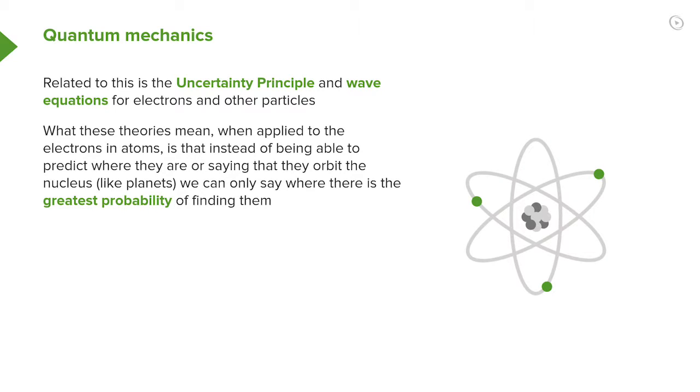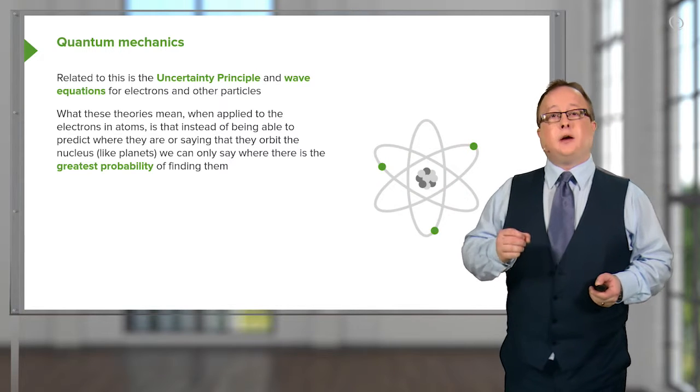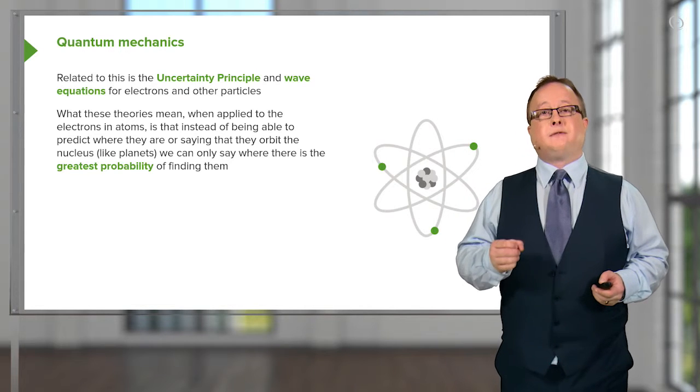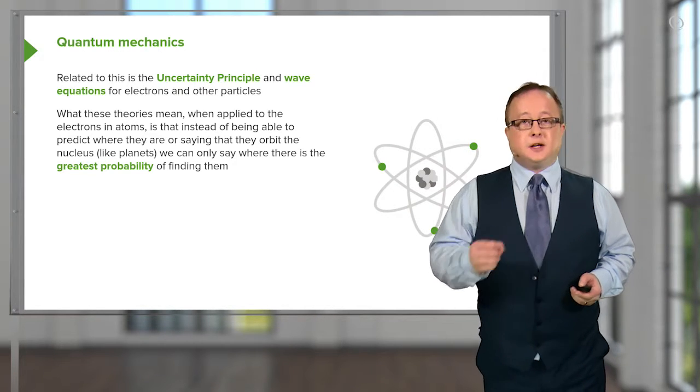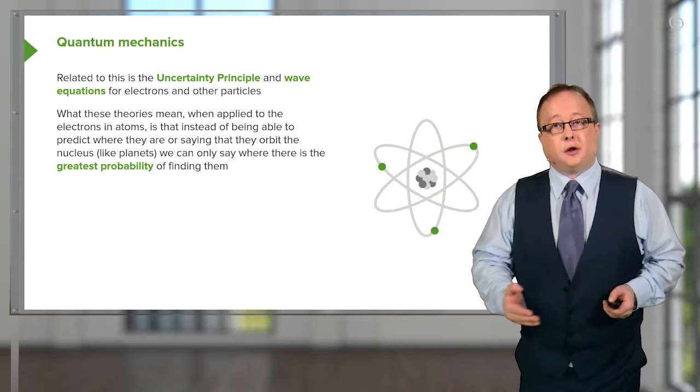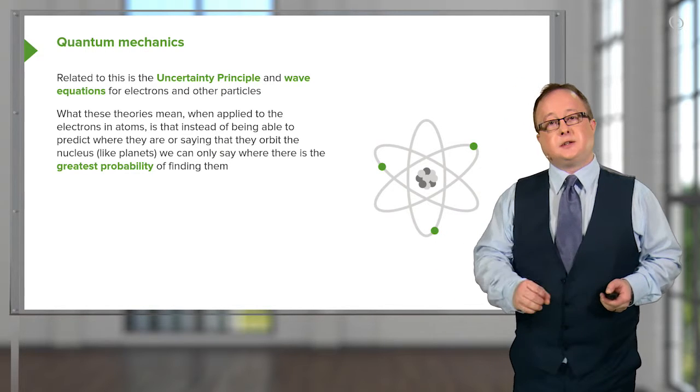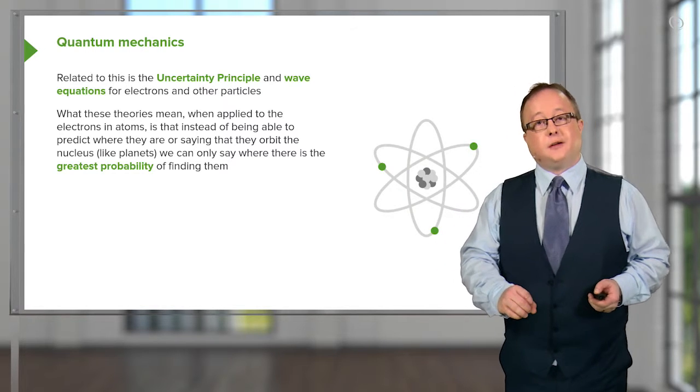What these mean is that when you're looking at an electron, you can't talk about an electron as being in a discrete part of a shell. All you can do is determine where is the greatest probability of being able to find it. This is very important because it relates to the existence, shape, and energy of orbitals.